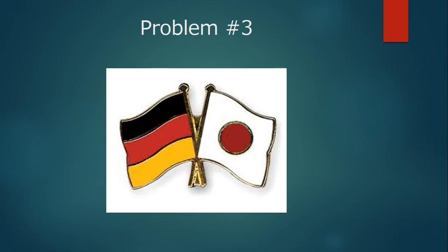Third, there are what are called enemy clauses, which allow invasion of Japan and Germany — the defeated nations of World War II — without a decision by the Security Council. Because these clauses have not been adapted, attacks can be carried out under the rules of the United Nations.